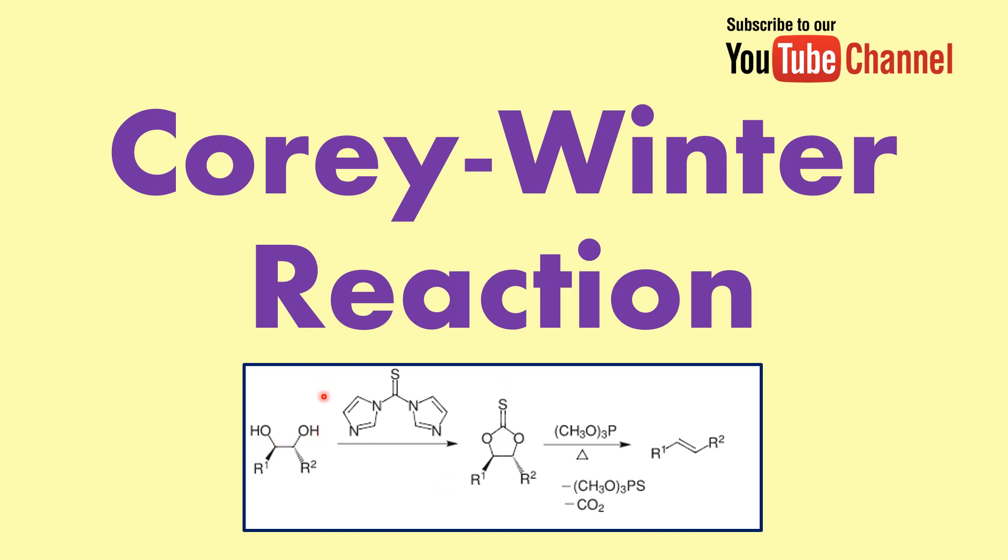What we do is treat these diols to convert them into thio carbonates. This can be done by reaction of TCDI, which is thiocarbonyl diimidazole. When we treat it with trimethyl phosphides or other derived types of phosphides, what you end up getting is the formation of alkene.